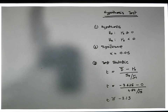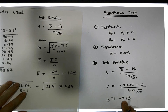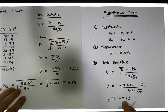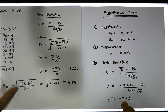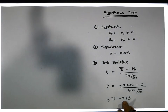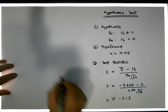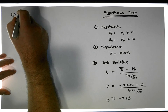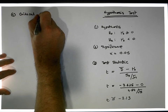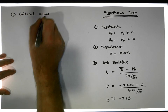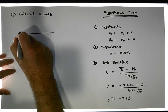In other words, the before-and-after measures show a reduction of minus 2.13 standard units. That's our test statistic. Now we need to calculate our critical values — step four.